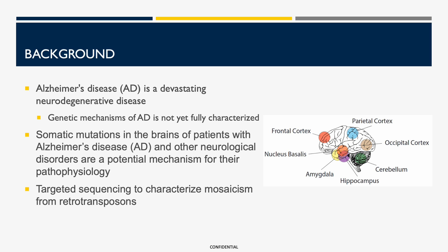We are interested in characterizing somatic mutations from retrotransposon activity. Mobile element insertions are not only an important source of variation, but these insertions can also cause disease. These elements are highly repetitive, which can make them challenging to characterize with short-read sequencing. So here, we are investigating the role of somatic mutations from retrotransposon activity as one potential disease mechanism, and to do this, we are doing targeted long-read sequencing in post-mortem brains from individuals with AD.